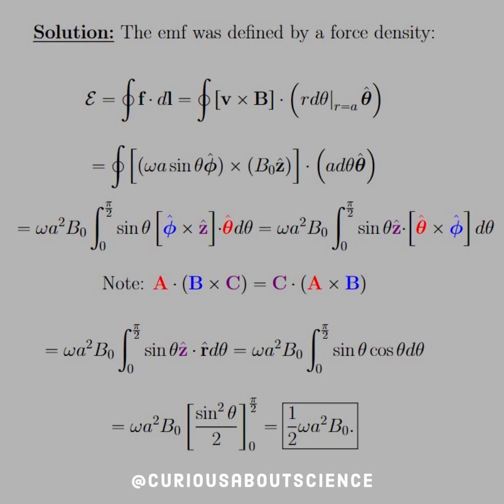So, the EMF is equal to little f, which is the force per unit length, dot DL, again closed. But we know that that is equal to V cross B, and DL is equal to the dot product of R D theta at R equal A, theta-hat direction.